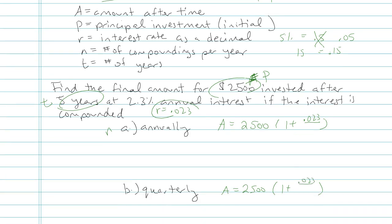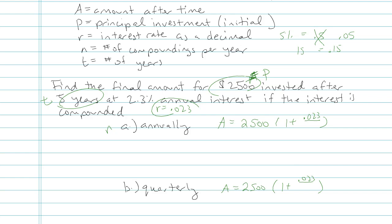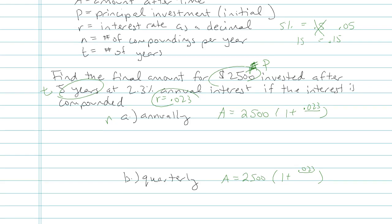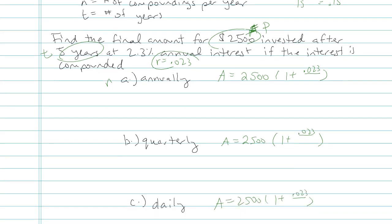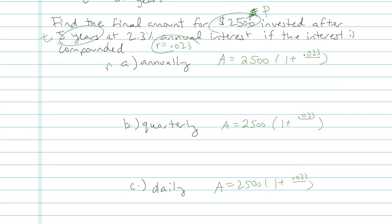And now things are going to change. Because in our formula, that insurance rate is on top of N. N stands for number of compoundings per year. So that's where we're going to start to diverge. And I'm going to start doing problem A only.